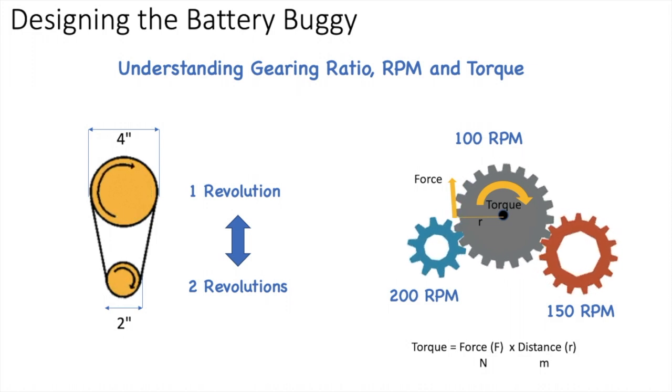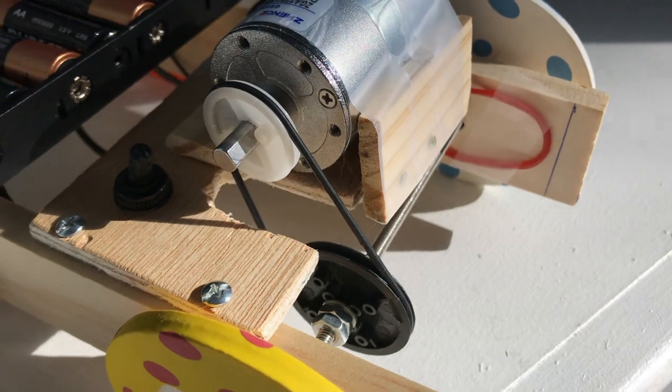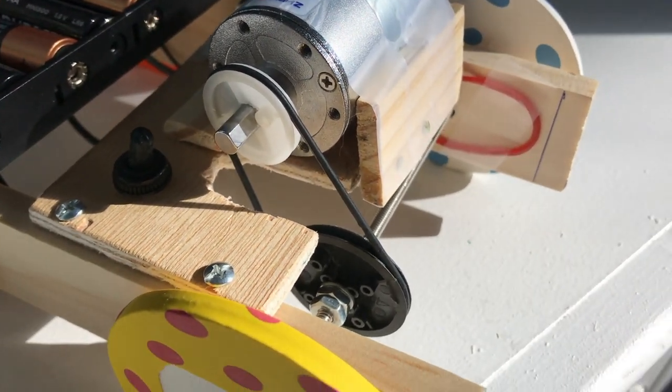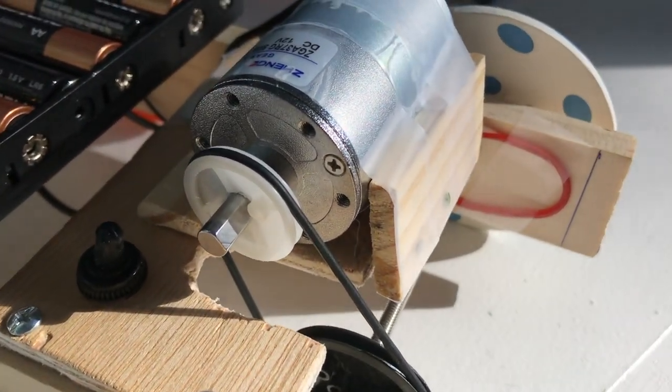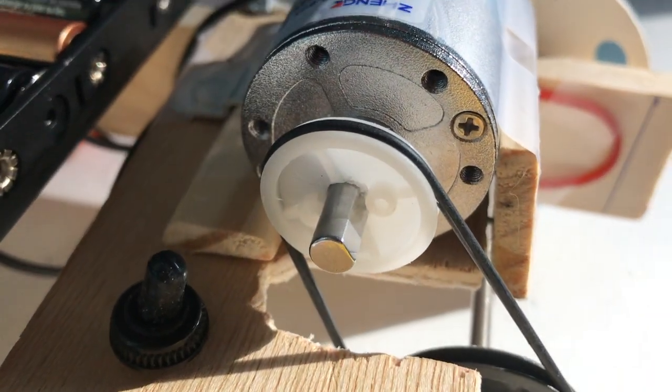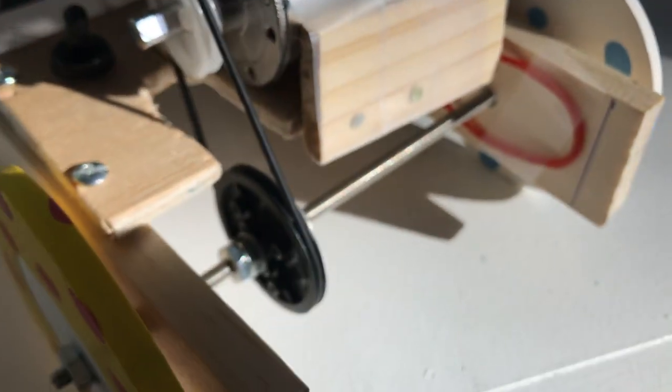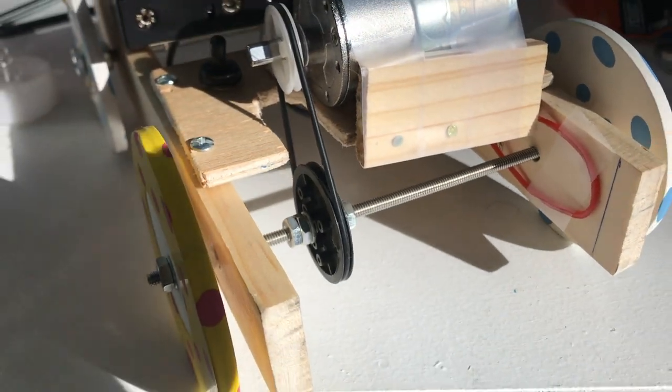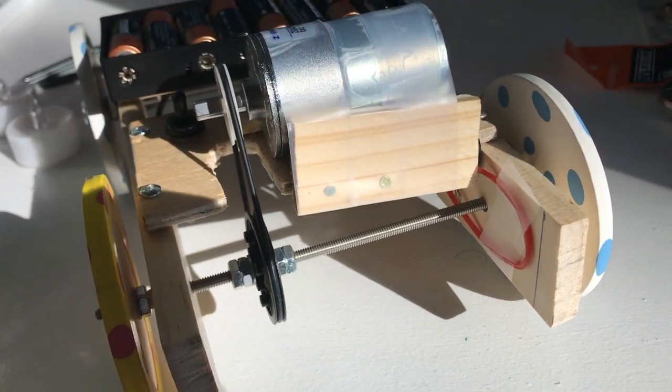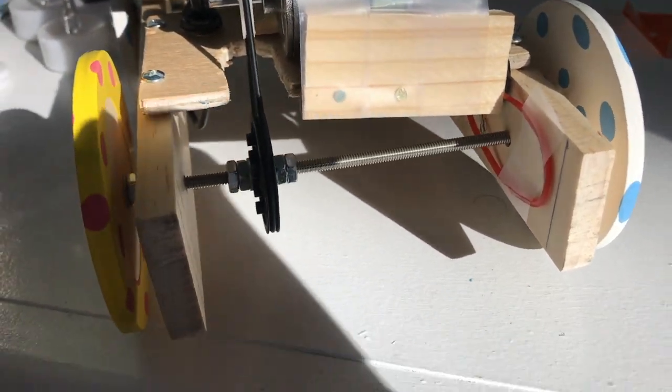I want to show you now how a pulley can work in a battery buggy. You see here there's a motor that's attached to one of the smaller pulleys, and it's connected to a larger pulley which is connected to the axle, and the axle is connected to the wheels. So all of the systems are connected.